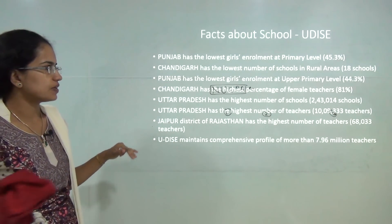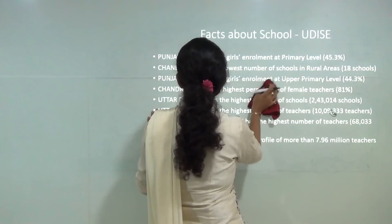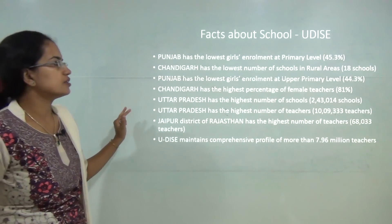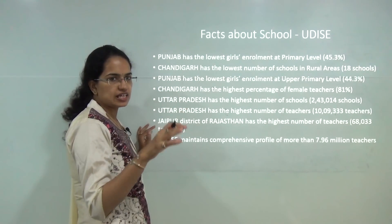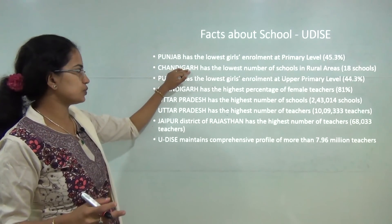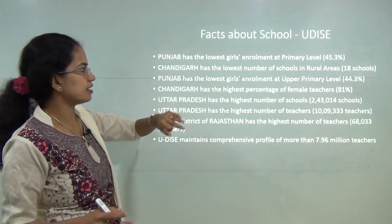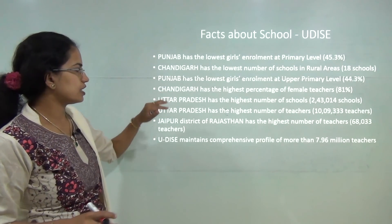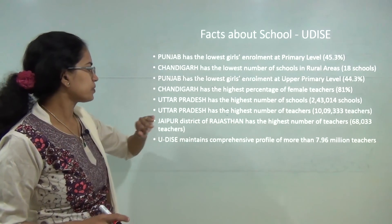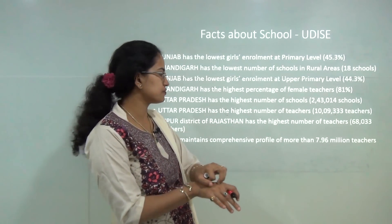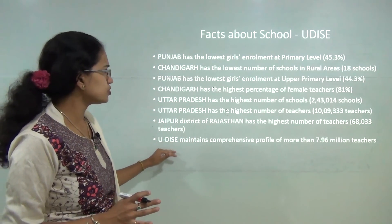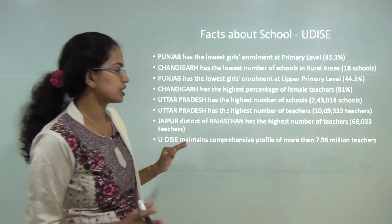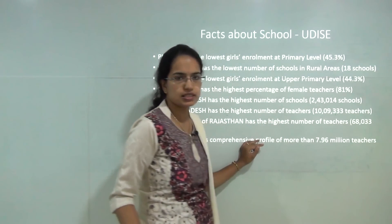Some key facts laid down by UDISE: Punjab has the lowest girl enrollment at both primary and upper primary levels. Chandigarh has the lowest number of schools in rural areas. Highest percentage of female teachers are found in Chandigarh. UP has the highest number of schools and teachers overall, however Jaipur district in Rajasthan has the highest number of teachers at the district level. The system maintains a comprehensive profile of nearly 7.96 million teachers in its database.